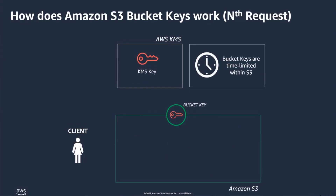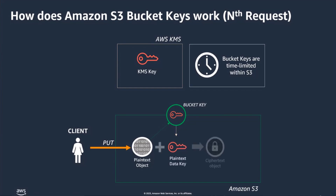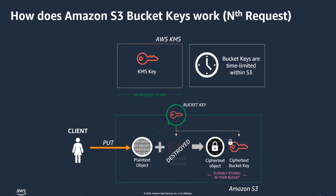Within the bucket-level key's time-limited life, you don't have to make additional calls to KMS on the next PUT request, so Amazon S3 performs the following encryption actions. Upon uploading your object, the short-lived bucket-level key will generate a new plain text data key to encrypt your object. Amazon S3 encrypts the object using the plain text data key and removes it from memory as soon as possible. Amazon S3 stores the encrypted bucket-level key as metadata with your encrypted object. This saves additional KMS request costs. In fact, AWS customers using S3 bucket keys have saved over $80 million on AWS Key Management Services.